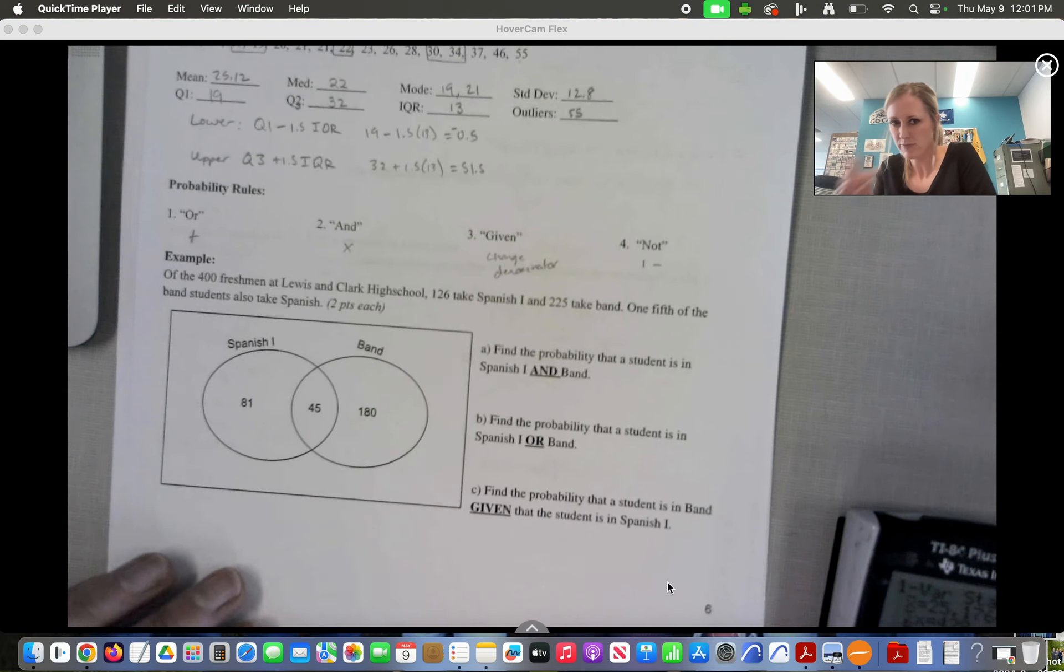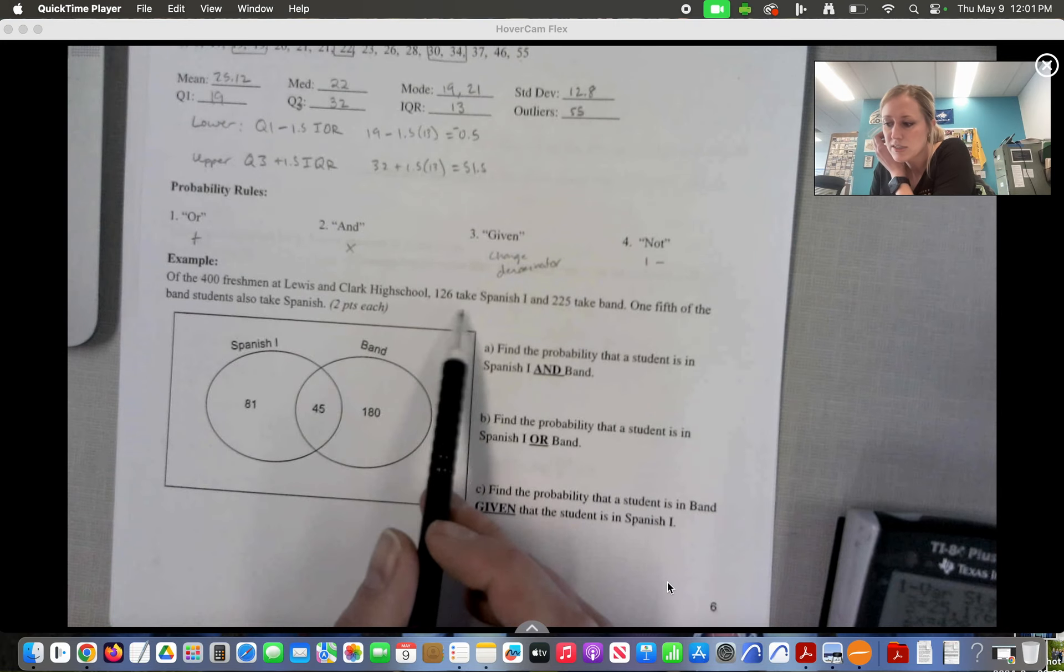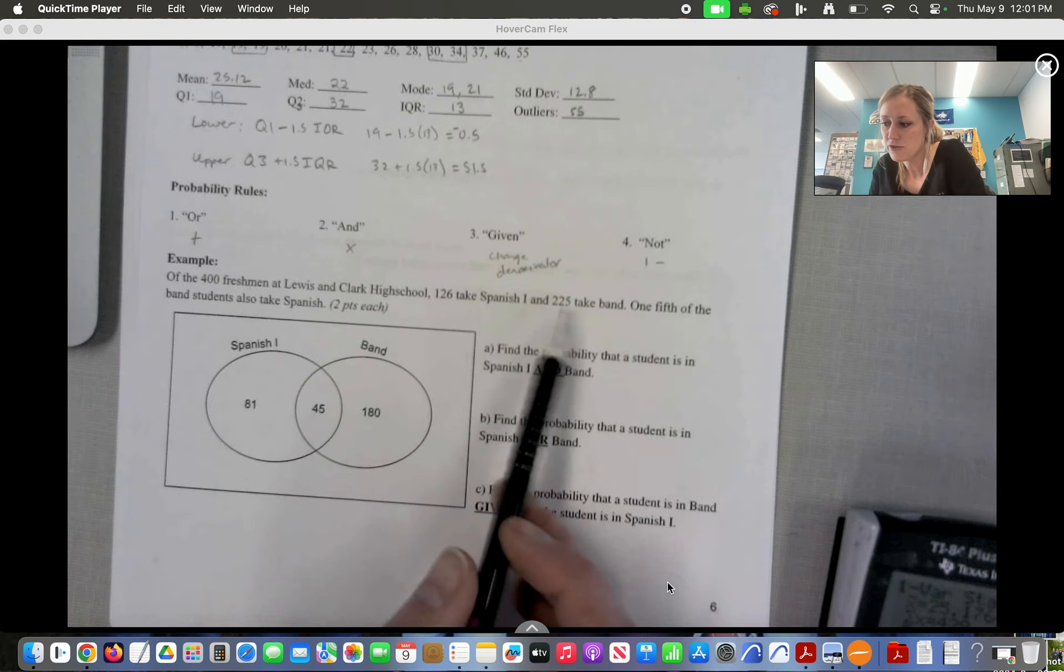So we're going to look at this Venn diagram. Of the 400 freshmen at Lewis and Clark High School, 126 take Spanish 1, and 225 take Band. A fifth of the Band students also take Spanish.